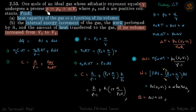The process given to us is p = p₀ + α/V. We need to find the heat capacity, change in internal energy, work performed, and heat, if the volume increases from V1 to V2.